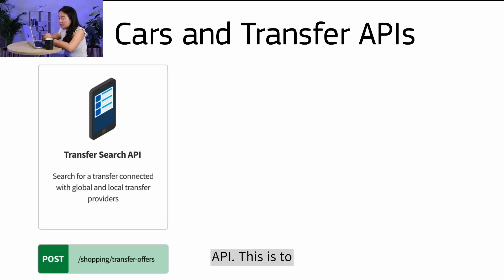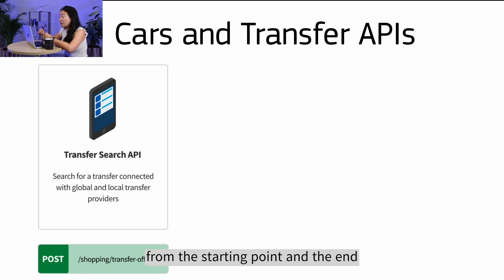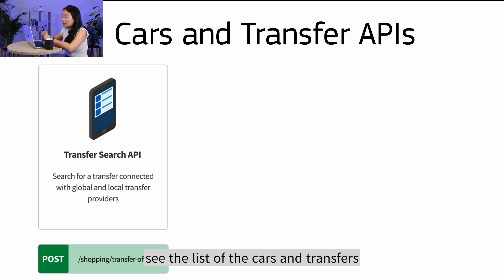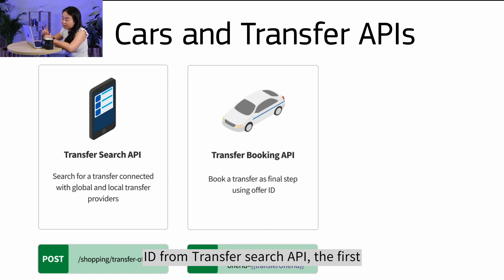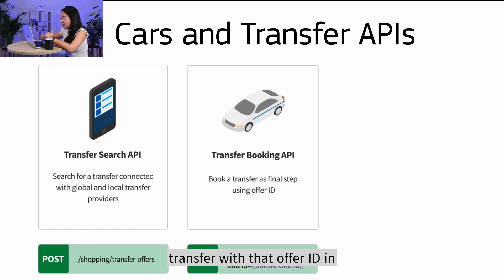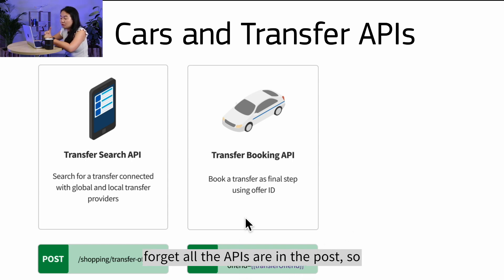The first API is the Transfer Search API, which is used to search transfers from a starting point to an end point. You will get back a list of available cars and transfers. The second API is the Transfer Booking API, where you use the offer ID returned from the Transfer Search API to book a transfer — provided in the path. Note that all APIs use the POST method, so you also need a request body.